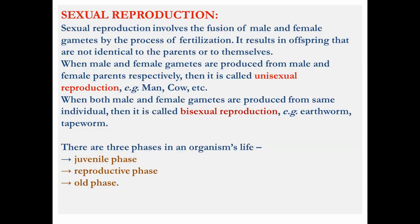Now we will start with sexual reproduction. What is sexual reproduction? Sexual reproduction involves the fusion of male and female gametes by the process of fertilization. It results in offspring that are not identical to the parents or to themselves — they are completely different from each other and also from their parents.